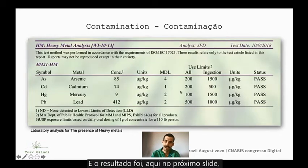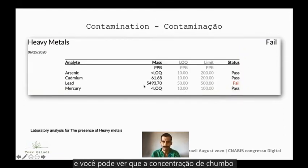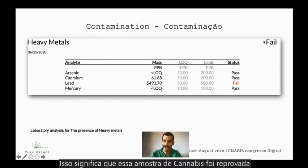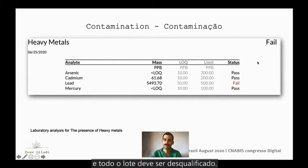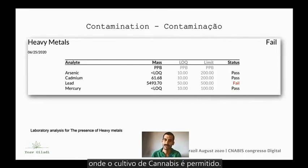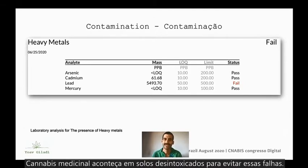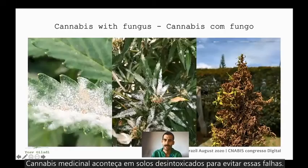They were still present, and the result was that in the next slide, the flowers produced on this land showed lead concentration just 10 times more than the limit amount. That means this sample failed and the entire batch needs to be disqualified. That is why there are many limitations and restrictions on the soil that cannabis is allowed to grow on. For example, in Israel, it is mandatory to grow medicinal cannabis in detached soil in order for these failures not to occur.